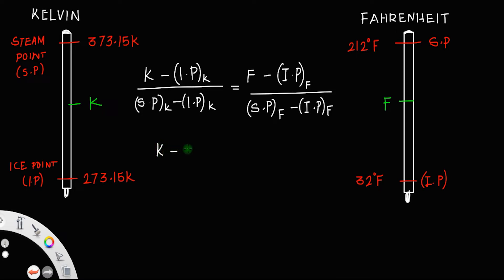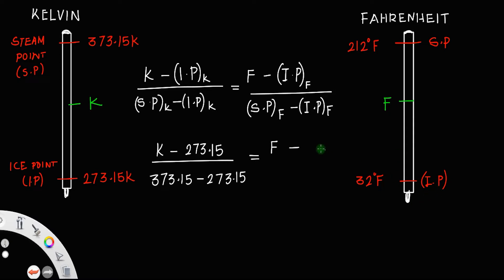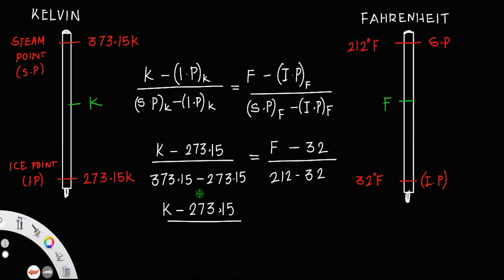This gives us K minus 273.15, divided by 373.15 minus 273.15, equal to F minus 32, divided by 212 minus 32. So this becomes K minus 273.15 divided by 100, equal to F minus 32 divided by 180.